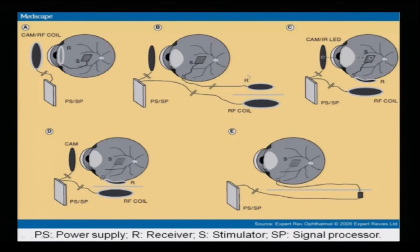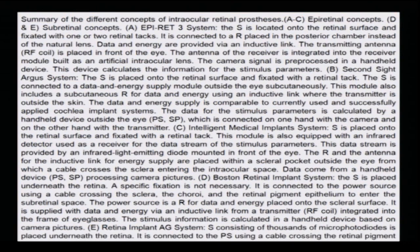This is how different cameras are being put and different implants are placed in different regions. There is a summary of different concepts of intraocular retinal prosthesis — either an epiretinal concept or a subretinal concept. There is the Boston Retinal Implant System, the Intelligent Medical Implant System, and the Second Sight Argus system. These are the different groups who over the years have developed different prosthesis regimes and come up with different models.